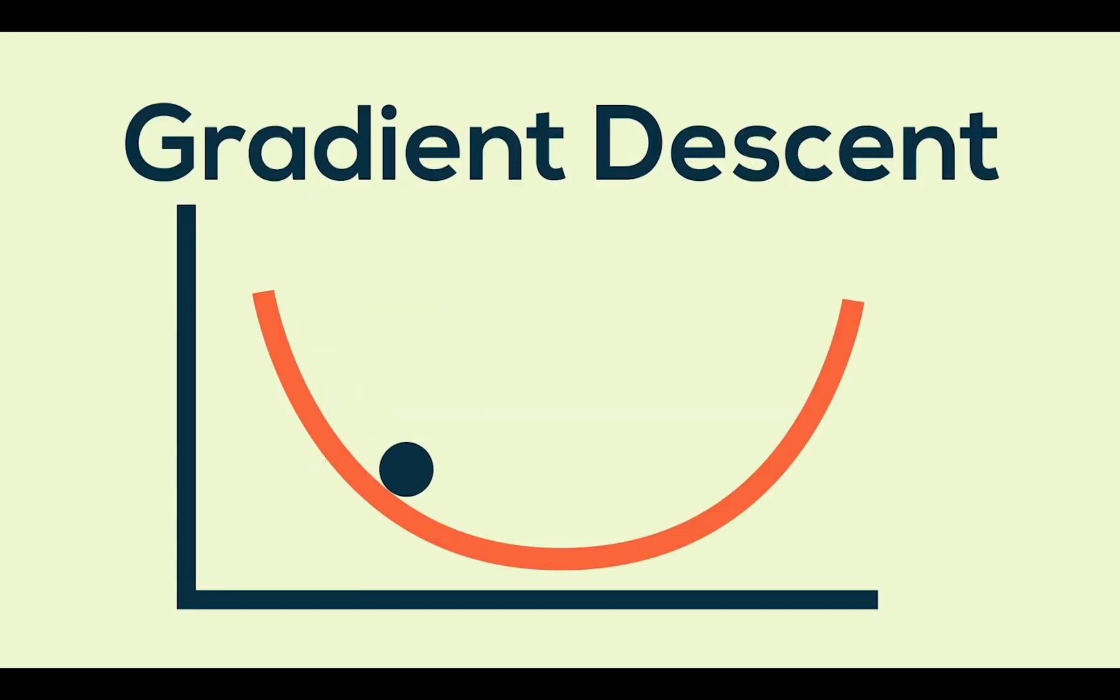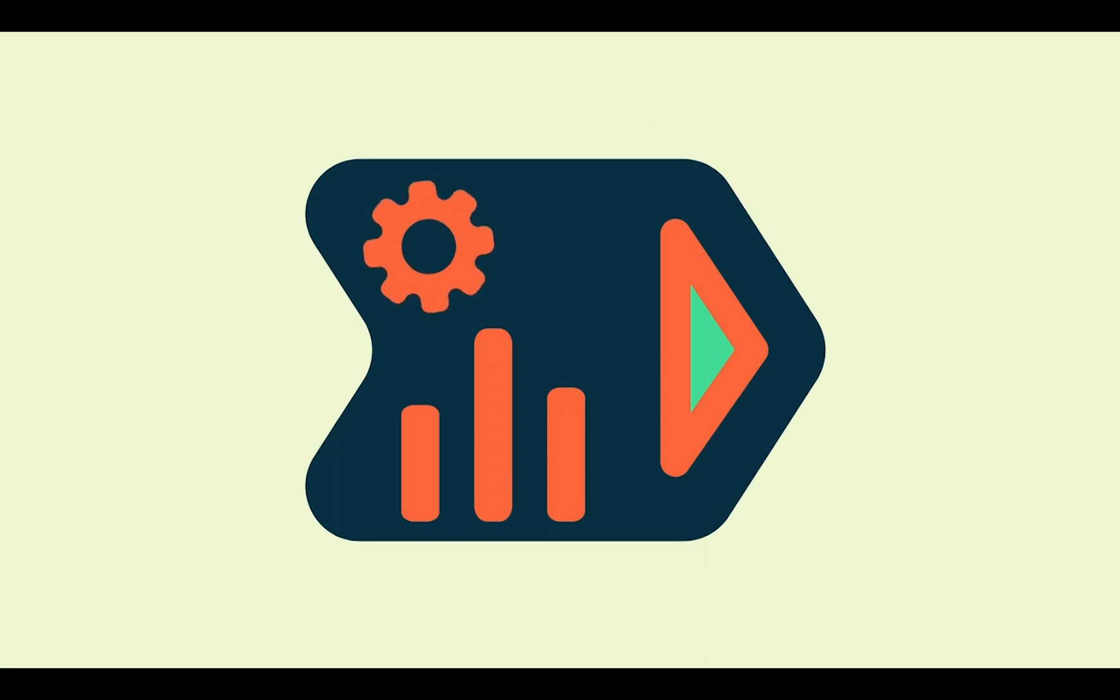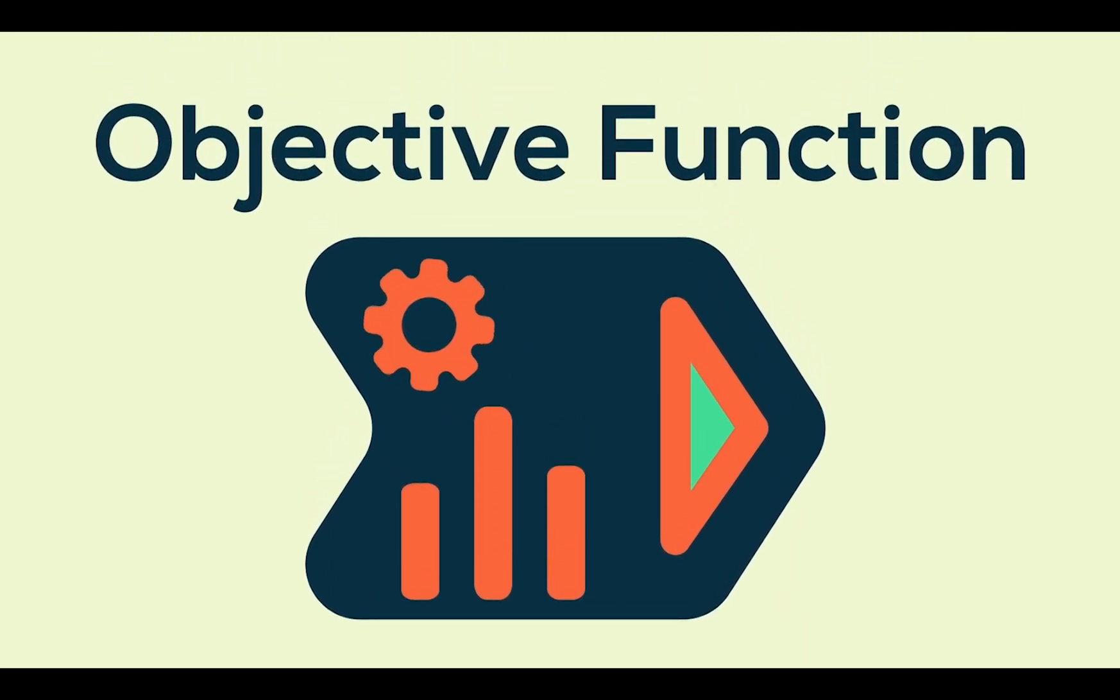And how it does this is with a process called gradient descent. Basically what it does is it uses a math equation called an objective function that will change the internal numbers in the right direction to make a more accurate guess next time.